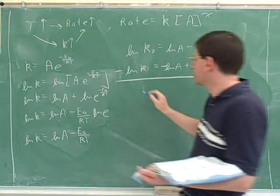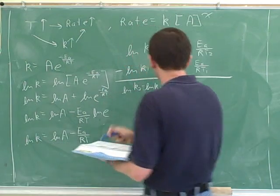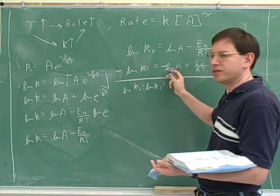So if I add these together, I would get natural log of k2 minus natural log of k1. Now the natural log of A terms cancel.